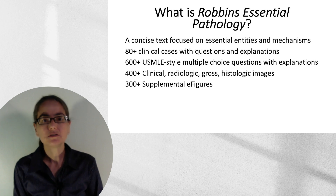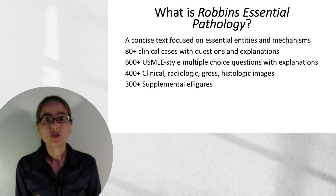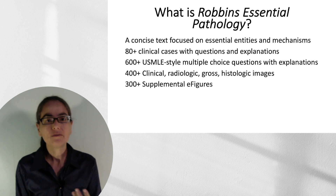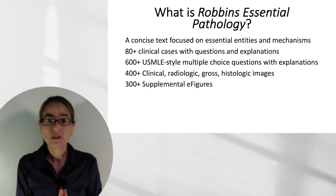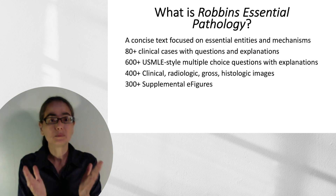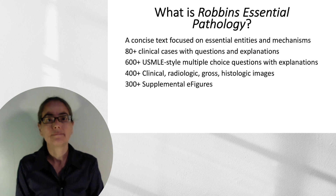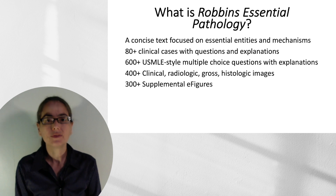Pathology is a very visual science, so we want to have images to help you really visualize what we're describing. We have more than 400 clinical, radiologic, gross, and histologic images in the print textbook. But as I've told you, this book is going to expand online — we actually have more than 300 supplemental images in the electronic book.